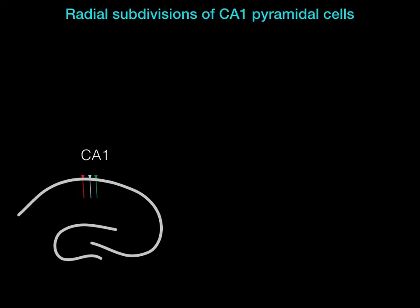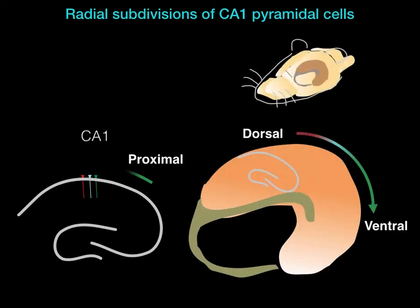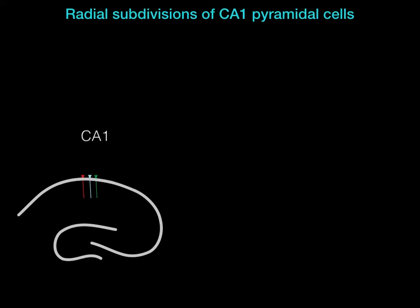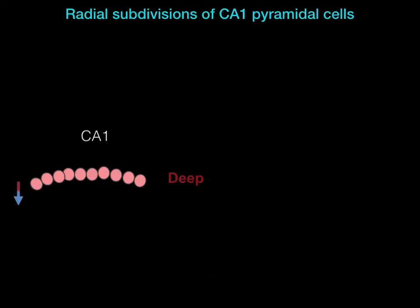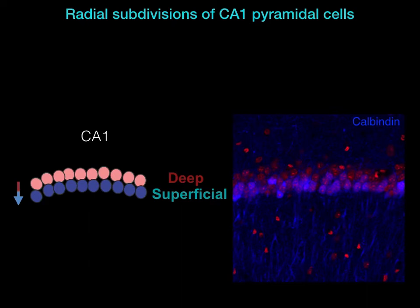Such functional gradients of pyramidal cells are increasingly appreciated along the dorsal-ventral and proximal-distal axis of the hippocampus. However, it remains unknown whether this framework extends to the third, radial axis of the hippocampus. This radial subdivision among deep and superficial pyramidal cells has long been recognized. Superficial and deep CA1 pyramidal cells differ both genetically and neurochemically — for example, only superficial pyramidal cells express the calcium-binding protein calbindin.